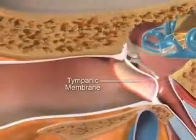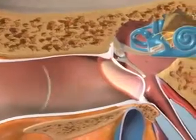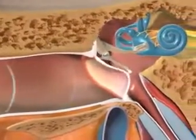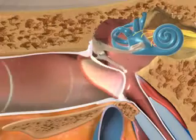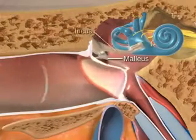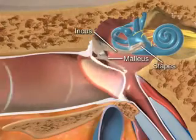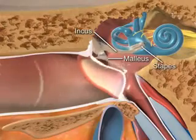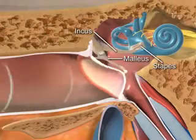The thin tympanic membrane separates the outer ear from the middle ear. Sound waves cause it to vibrate. The three tiny bones of the middle ear are the hammer or malleus, anvil or incus, and stapes or stirrup. These bones pick up the vibrations from the tympanic membrane and transmit them to the inner ear.